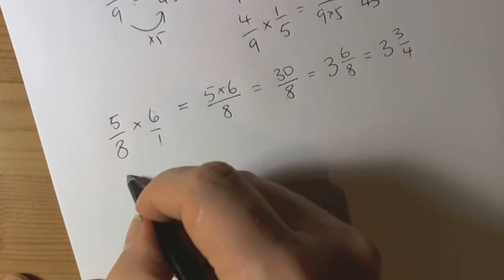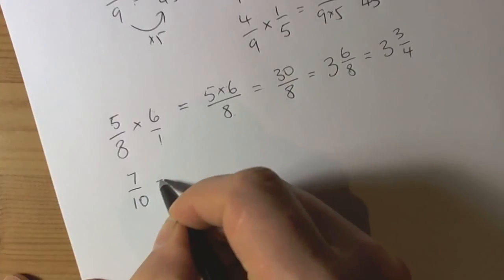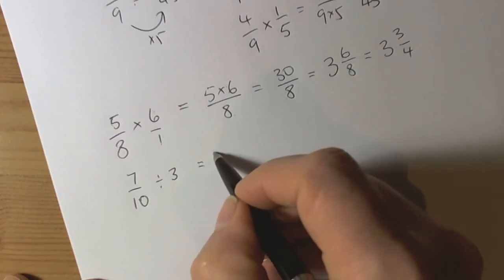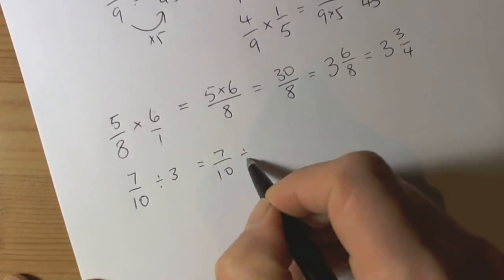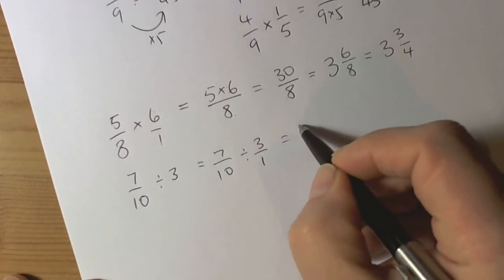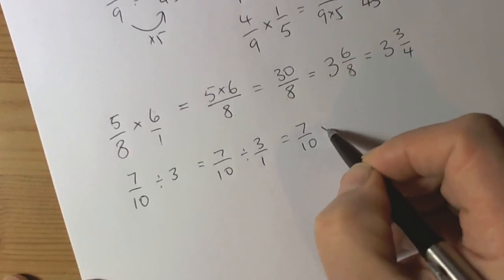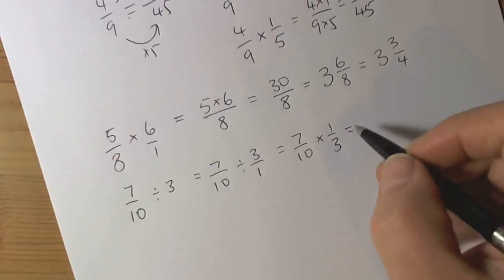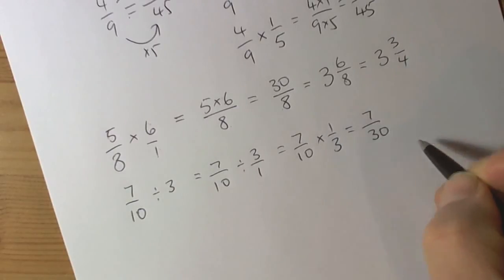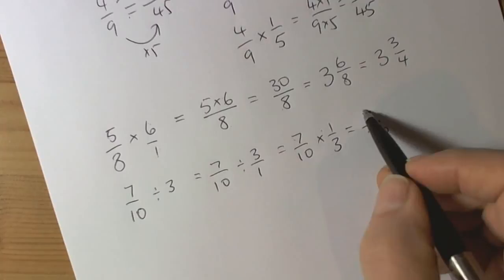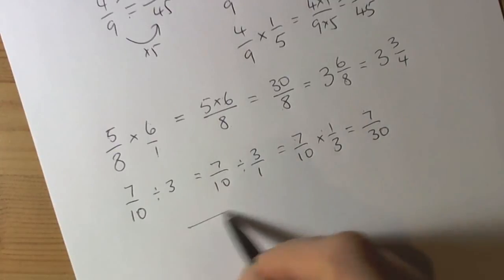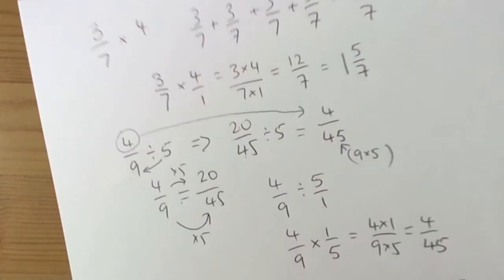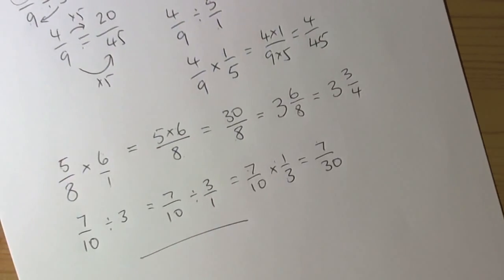A division one. So I say we've got to do 7 tenths divided by 3. Then we can think of this as 7 tenths divided by 3 over 1. Which is the same as saying 7 tenths times 1 over 3. So we end up with 7 over 30. 7 times 1 is 7. 10 times 3 is 30. So that's some examples of dividing and multiplying by integers. Fractions by integers.